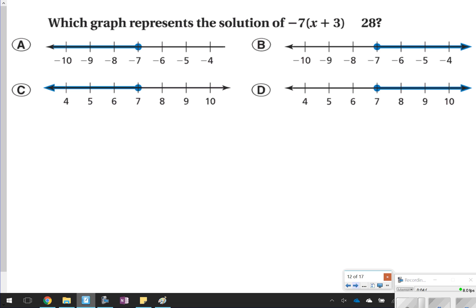This one says, which graph represents the solution of negative 7 times (x + 3) is greater than or equal to 28. So what I first need to do is distribute negative 7x minus 21, because negative 7 times 3 is negative 21. Still greater than or equal to 28.